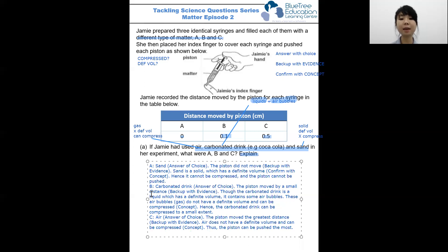Finally, for C, it is air. Why? Because we observe that the piston moved the greatest distance, and the concept being air does not have a definite volume, and so it can be compressed, allowing the piston to be pushed the most.